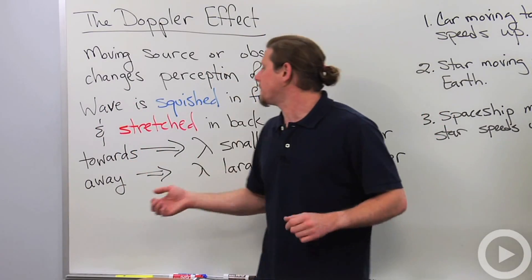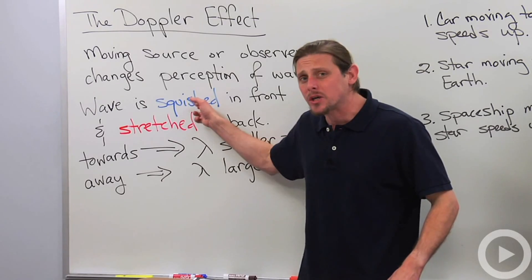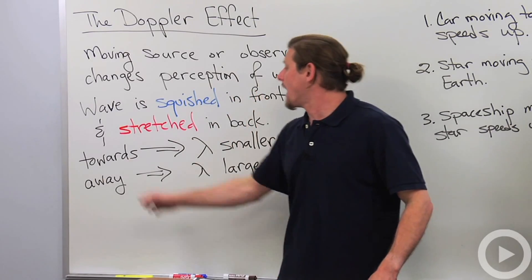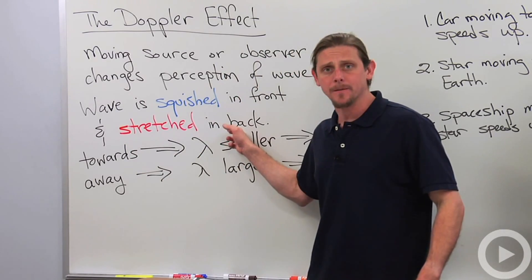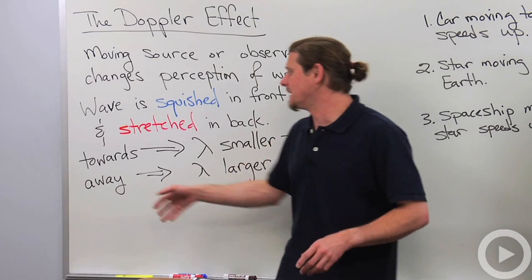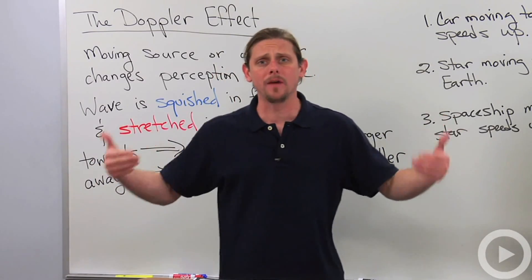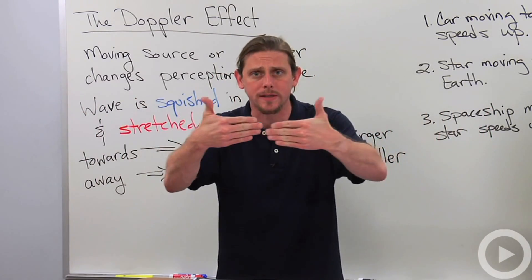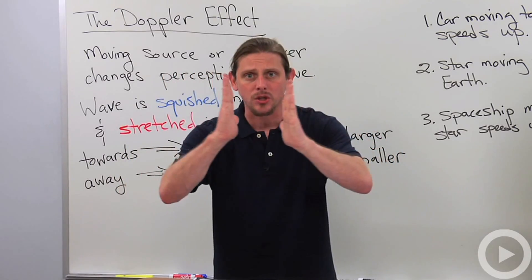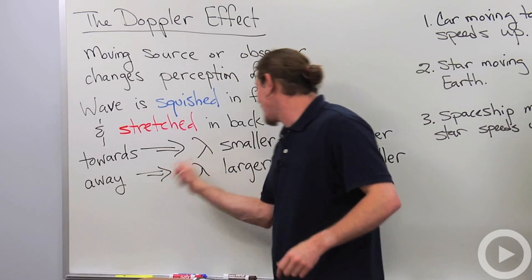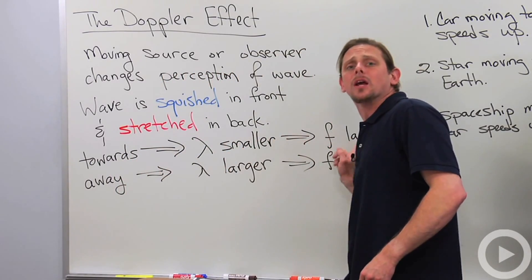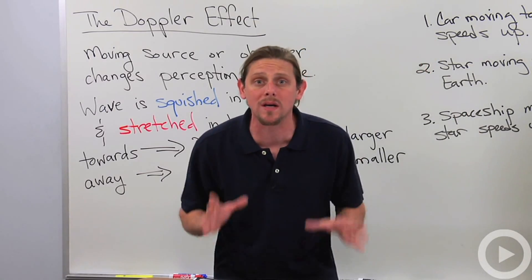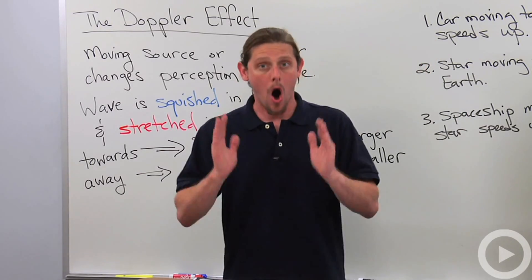All right, so what happens? The wave will be squished in front, and it will be stretched in back. So that means that when the source and the observer are moving towards each other, the wave is squished. So that means that the wavelength is smaller and the frequency is larger than it would be if there wasn't any relative motion.